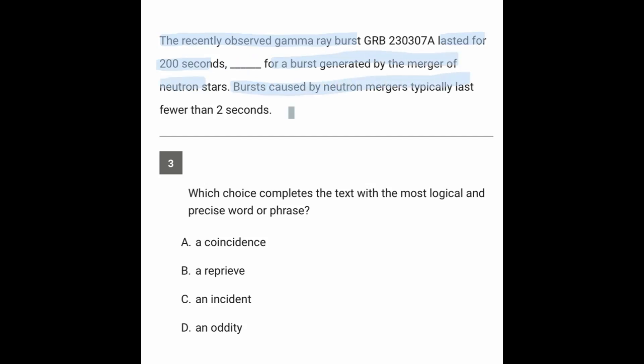These types of bursts typically last fewer than 2 seconds. So this one lasted for 200 seconds, but typically they last for 2 seconds. So that might be unusual for this type of gamma ray burst.